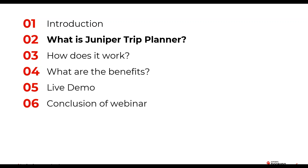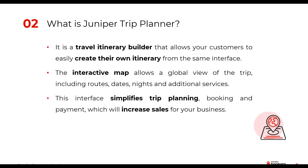What is the Juniper Trip Planner? This is a travel itinerary builder that will allow your customers to create their own itinerary, including flights, hotels, and other additional services from the same interface. The interactive map will allow your customers to have a detailed overview of the trip, including routes, dates, nights, and additional services. This interface simplifies the planning, booking, and payment of the trip, which will translate into increased sales for your business.